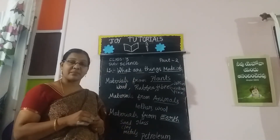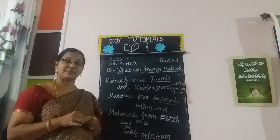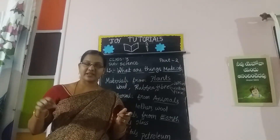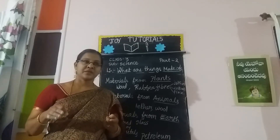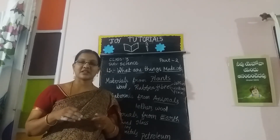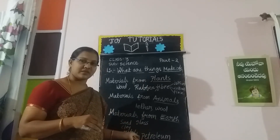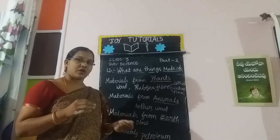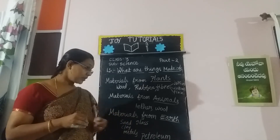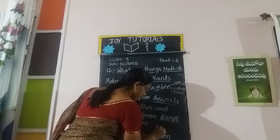Next, metals. We can get many things from metals. We can prepare engine bodies, cars, buses, and many utensils used in our kitchen. Metals like copper, aluminum, and iron are commonly used. Some metals like gold and silver are very costly.